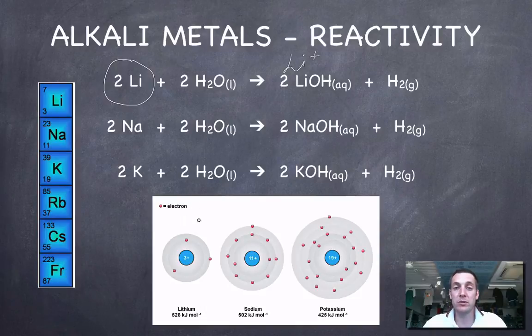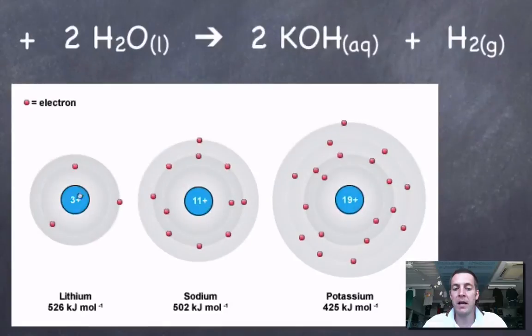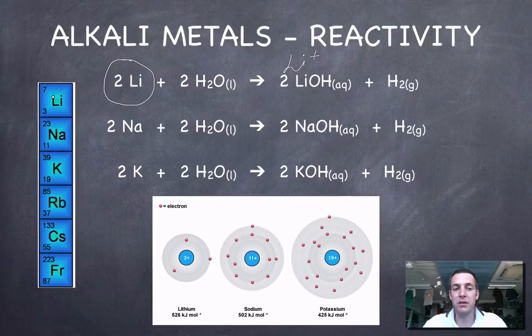We should know that the first ionization energy for these metals is falling as we go down the group. As we go down the group, the core charge stays the same in spite of the fact that the nuclear charge is increasing. This means the shielding of the inner electrons is increasing by the same amount. The distance of this electron from the nucleus is increasing all the time, so potassium is much more reactive than lithium because it's easier to remove its electron. The lower down this group we go, the more reactive these metals become.